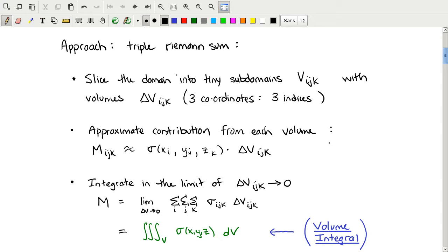We then compute the approximate contribution from each of those volumes to the total quantity—in this case, for concreteness, mass. Given a tiny subvolume delta v_i,j,k and an approximate density within that subvolume, sigma of x, y, and z, then approximately the total amount of mass in that volume is sigma times the volume itself. Density times volume gives us mass.